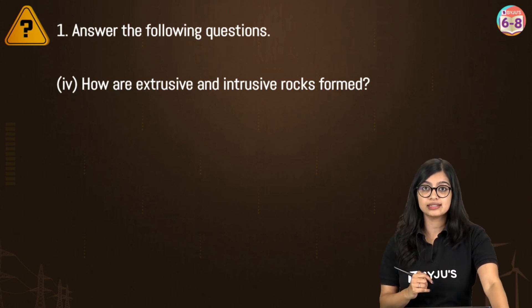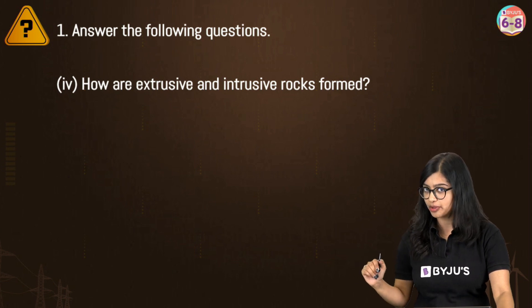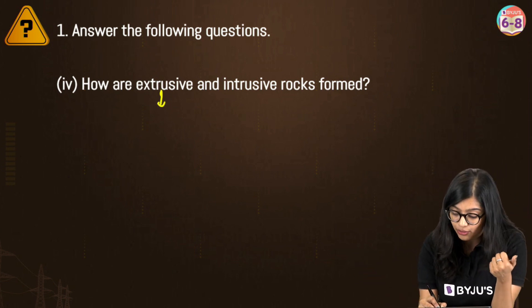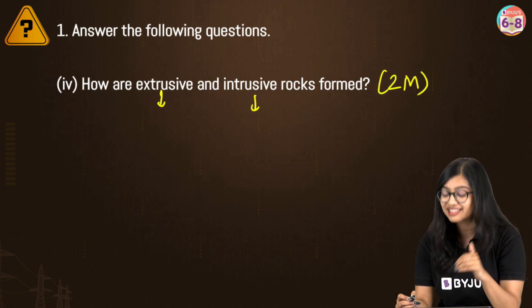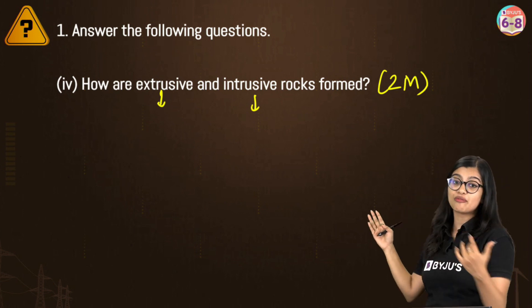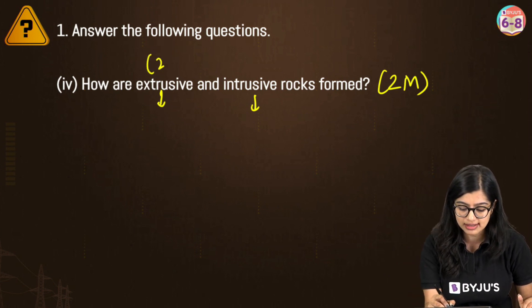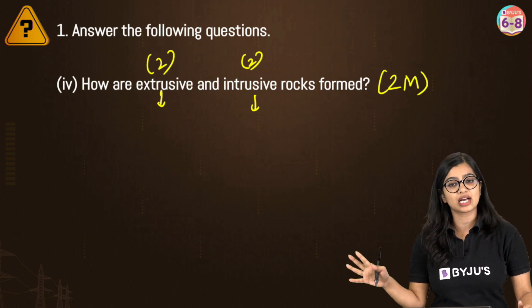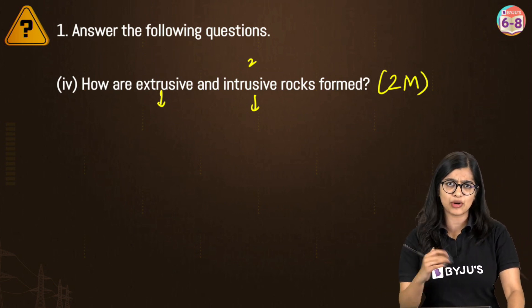The next question is: how are extrusive and intrusive rocks formed? You need to address both extrusive and intrusive rocks, so this can come for two marks easily, and in some cases even as a point of difference for four marks — where two marks go for extrusive and two marks for intrusive. If the question comes for two marks, you just need one point each. Let's elaborate the answer.